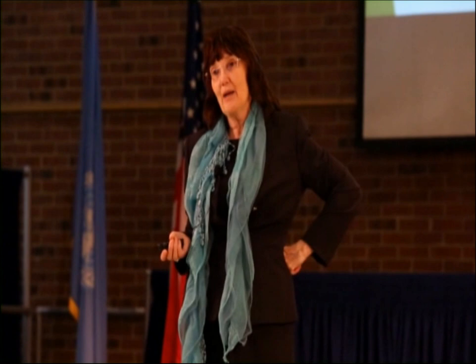So we need these tools, but we need to be very aware that it's probability, not prediction, and we're applying group norms to an individual. As we're dealing with young people, we have to be very careful about labeling and the fact that we might be wrong. There's a 20 percent chance that we're absolutely wrong, which is why my thinking, even in the last month, has gone to risk reduction rather than risk prediction.